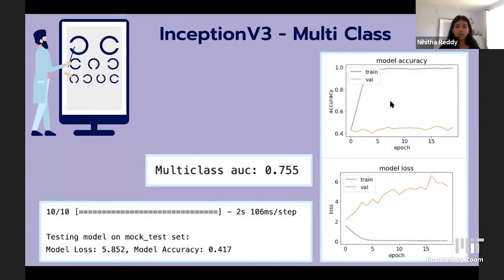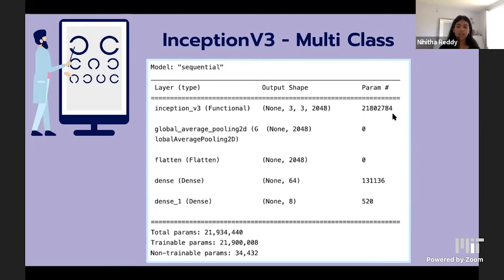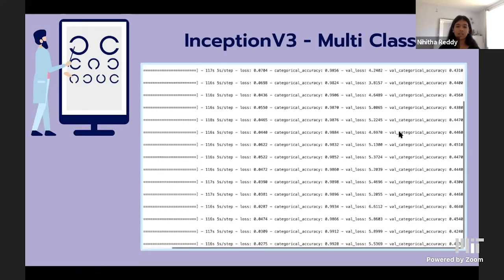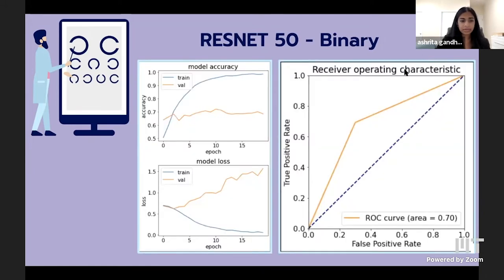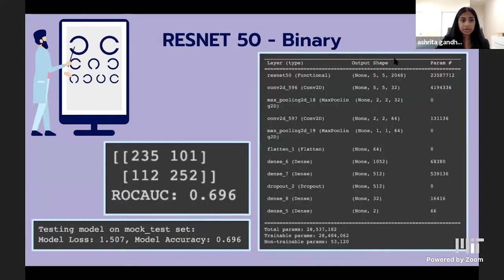Our final transfer learning model for binary classification was ResNet50 — researched to be among the four best image classification models. Using 20 epochs, our AUC was 0.7. Most similar work only classifies between normal vision and cataracts, so we broadened the spectrum to classify seven diseases with multi-class. Compared to the zero-rule baseline accuracy of about 50%, our 70% is a good result for general purposes.